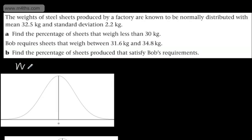The weights follow a normal distribution with a mean of 32.5 and a variance of 2.2 squared. So that's what we have. What we're interested in in the first part is the percentage of sheets that weigh less than 30 kilograms. So we can write it out and we're looking for W less than 30.